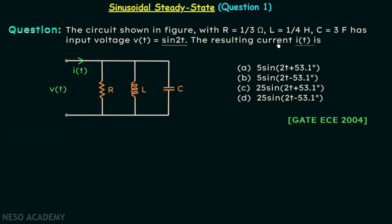Inductance is equal to 1/4 henry and the capacitance is equal to 3 farads. Four options are given in the question and we are required to choose one correct option.